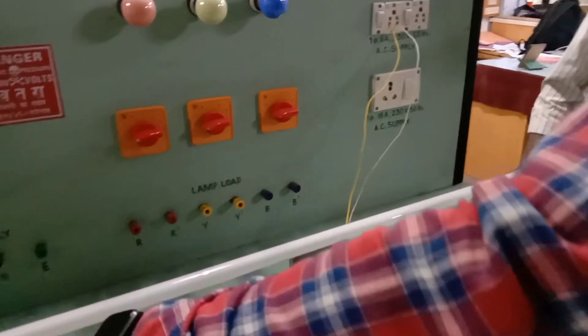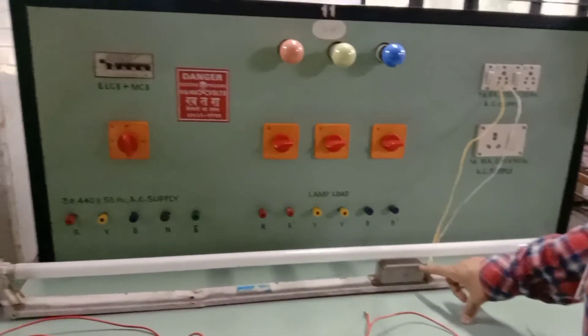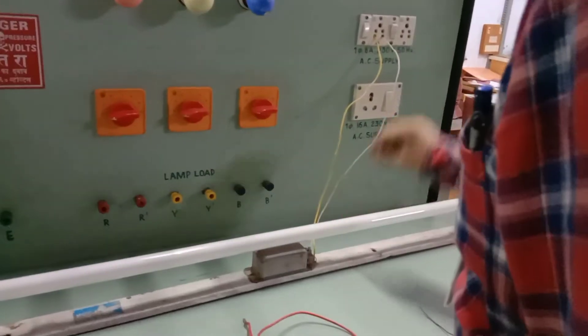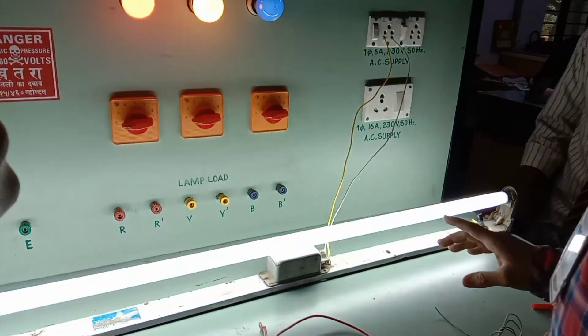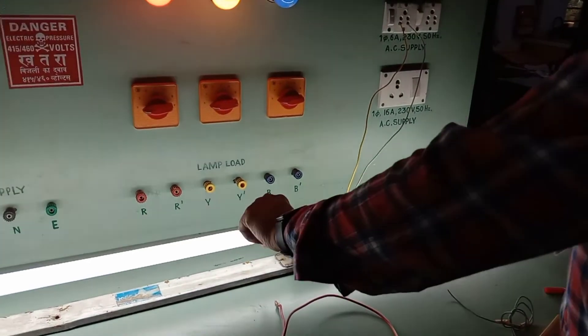Now observe. The connections are ready. You can see we did connection according to our instruction. Now I will check on this supply. Yes. This means our tube light is working.